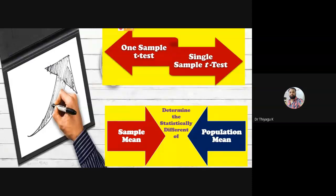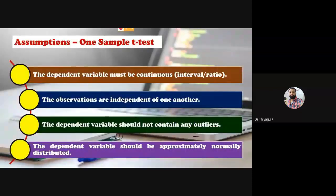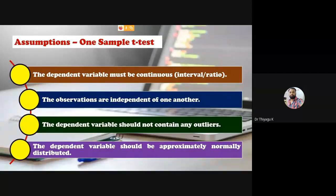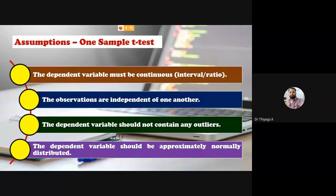To compare whether the sample mean score is statistically different from our population mean score, we can adopt the one-sample t-test. For doing a one-sample t-test, certain assumptions are needed. We need only one group — the sample group — and that score or variable should be continuous in nature, meaning interval or ratio. The observations must be independent, meaning it is an unrelated sample.